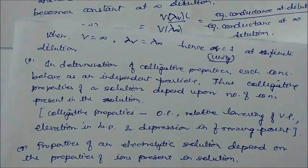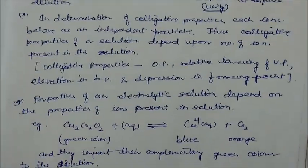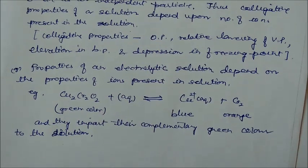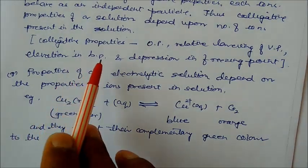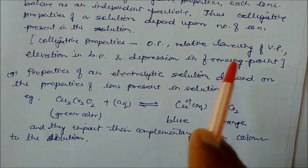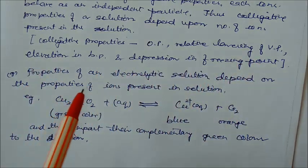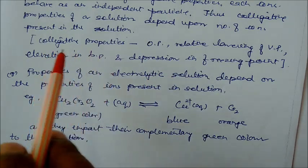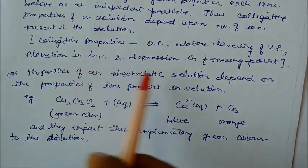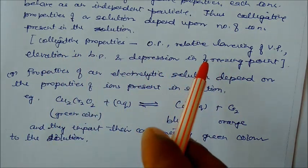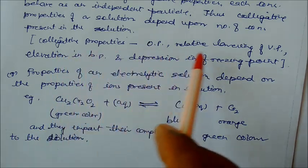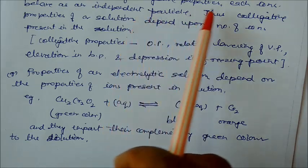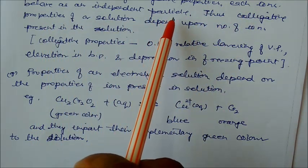The colligative properties are: osmotic pressure, relative lowering of vapor pressure, elevation in boiling point, and depression in freezing point. If you have studied the solutions chapter you will understand this. Each ion behaves as an independent particle — for example, NaCl breaks into two particles: Na⁺ and Cl⁻, which are counted as two independent particles.